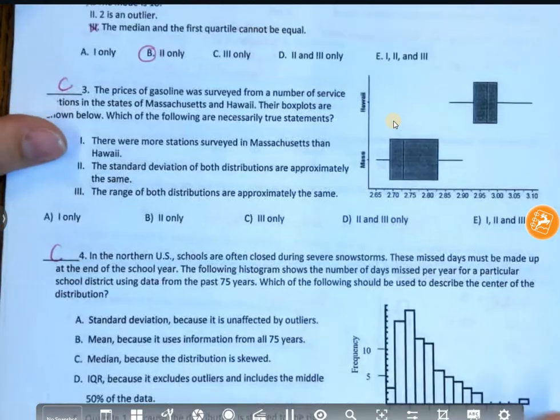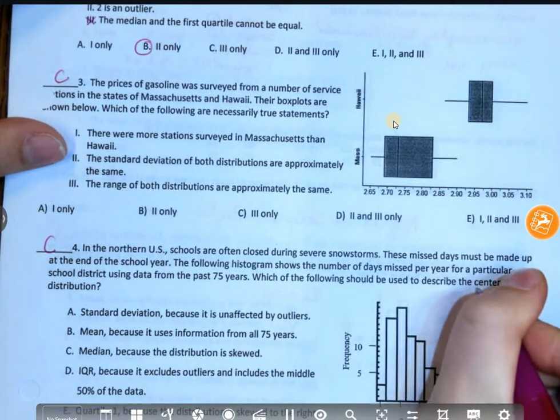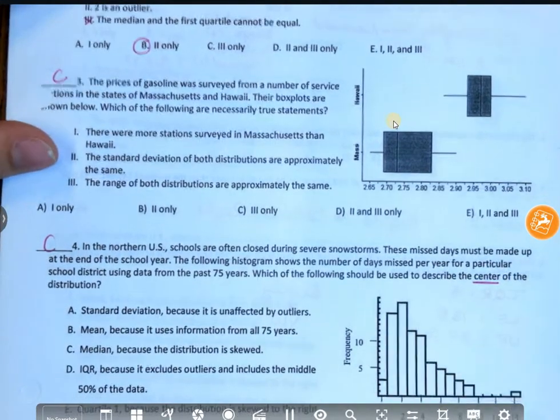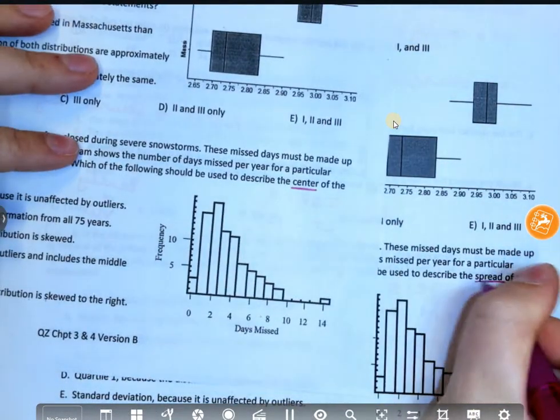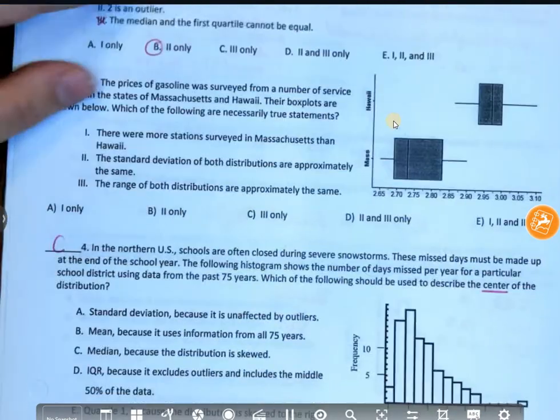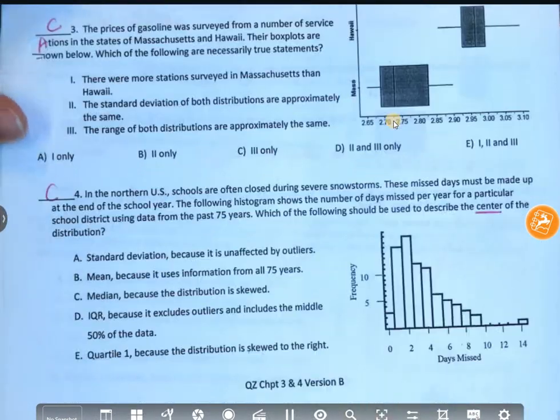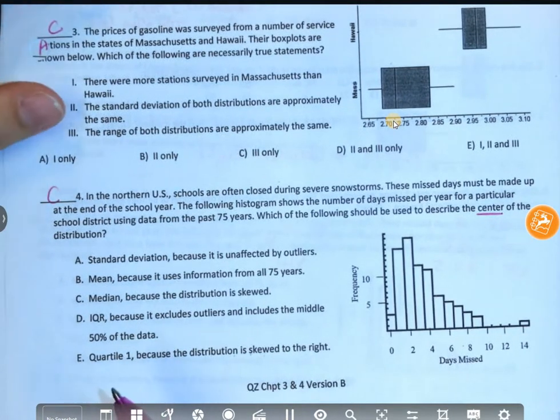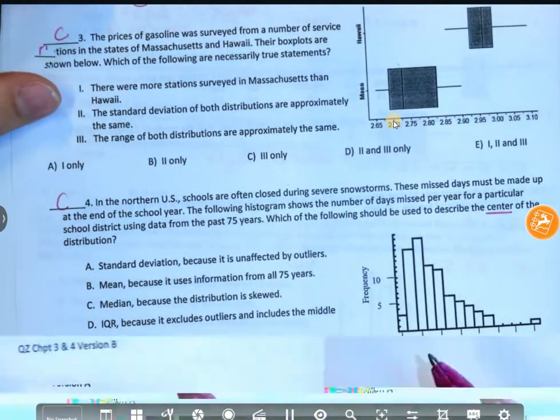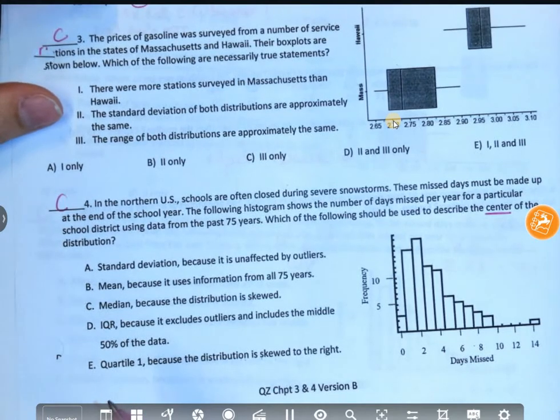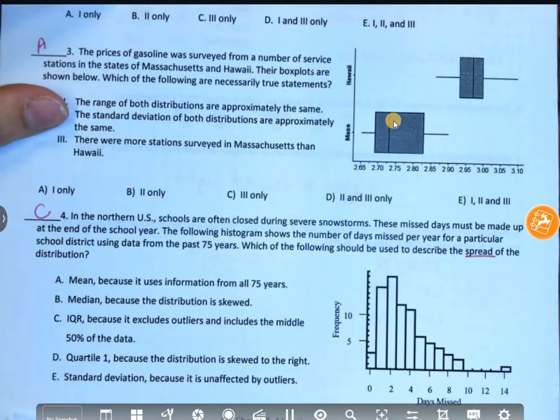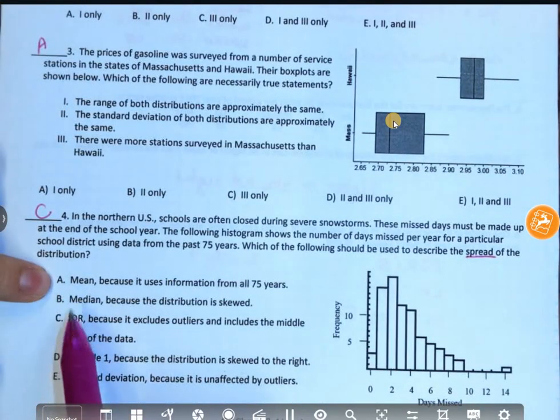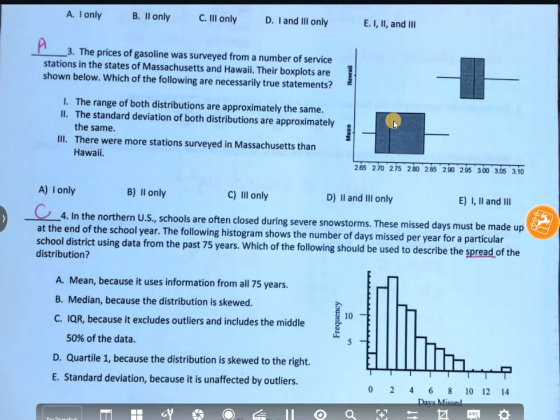There are a lot of people in here that I just wanted to throttle on number 4. Depending upon which version you had, it said either center or spread. The number of people who for center told me either standard deviation, interquartile range, or quartile 1, none of those are measurements of center. And for this one, spread, I had people give me mean or median. Yeah, those aren't measurements of spread.